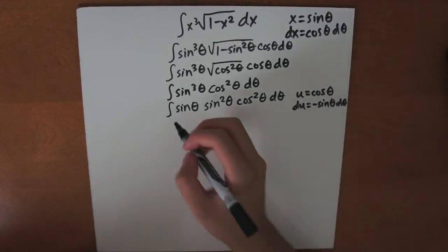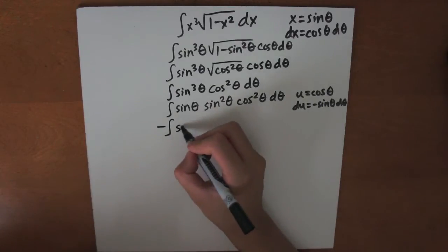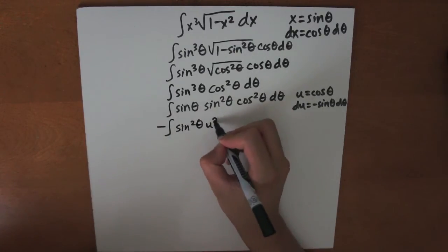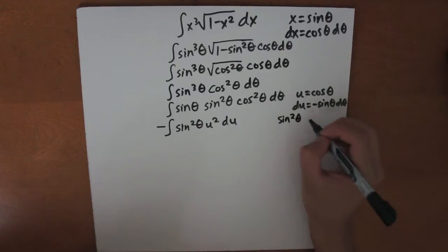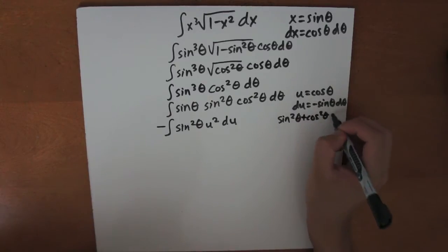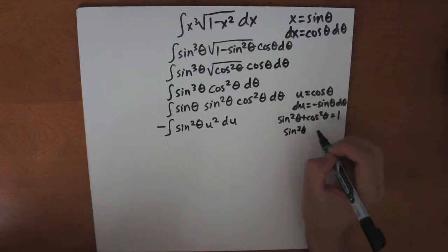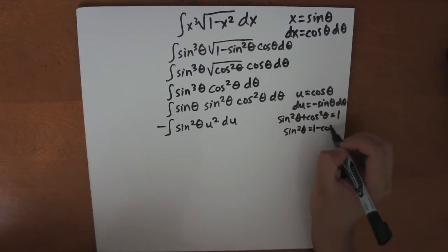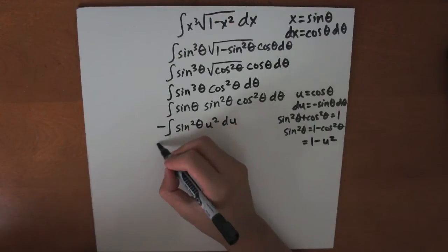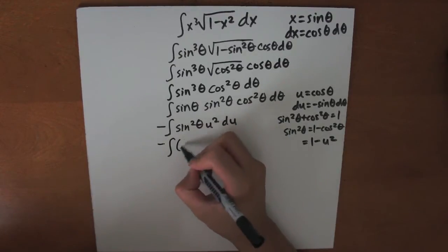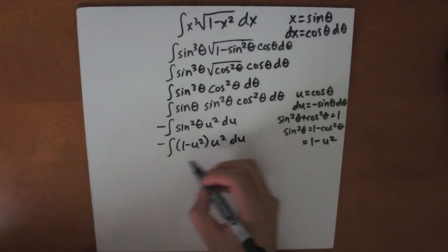So now let's plug this back in. The sine will cancel out. Put a negative out front. So we get the integral of sine squared theta times u squared du. Using the identity sine squared theta plus cosine squared theta equals 1, we can solve for sine squared theta, which equals 1 minus cosine squared theta, or in this case 1 minus u squared. So let's plug this back in, so this becomes the integral of 1 minus u squared times u squared du.